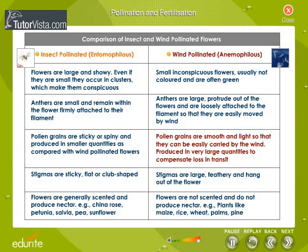Stigmas of insect pollinated flowers are sticky, flat, or club-shaped, whereas stigmas of wind pollinated flowers are large, feathery, and hang out of the flower. Insect pollinated flowers are generally scented and produce nectar; examples include china rose, petunia, salvia, pea, and sunflower. Wind pollinated flowers are not scented and do not produce nectar; plants like maize, rice, wheat, ferns, and pine have wind pollinated flowers.